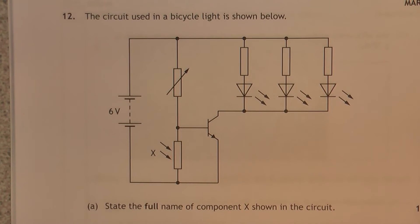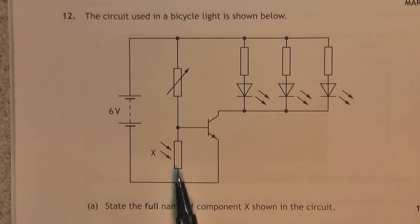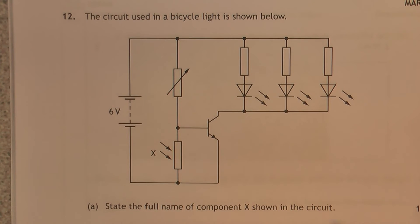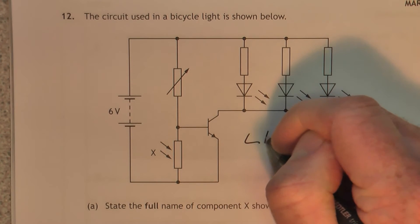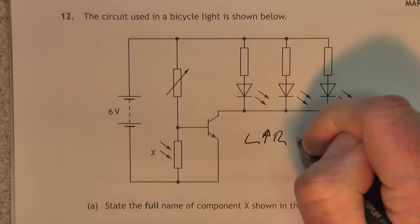Now, this question is asking and explaining how the circuit works. So here we have the sensor. Now, this sensor is a light-dependent resistor. So when the light goes up, the resistance goes down.